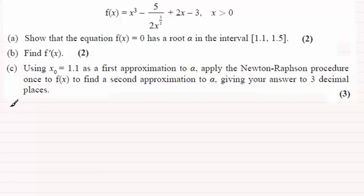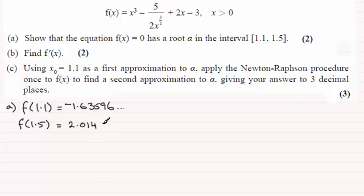And to do this all we need to do is check for a change in sign. So we just do f of 1.1, let x be 1.1, substitute it into here and you should find that you get minus 1.63596 and so on. And if you do f of 1.5 then you end up with a positive value, that positive value is 2.01417 and so on.